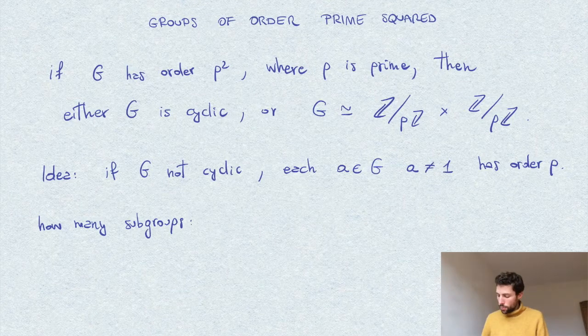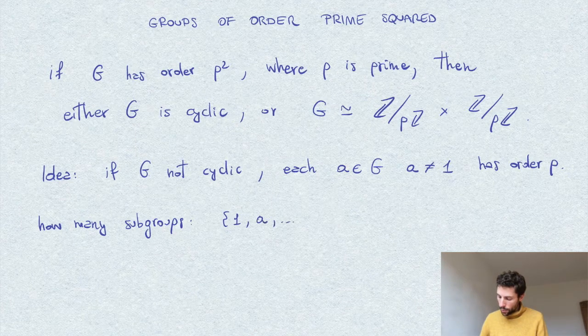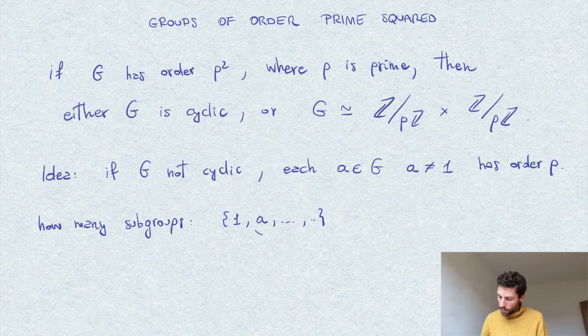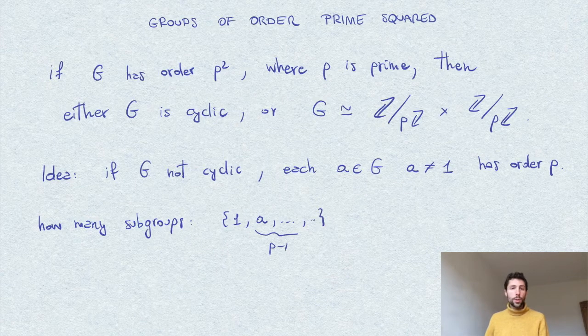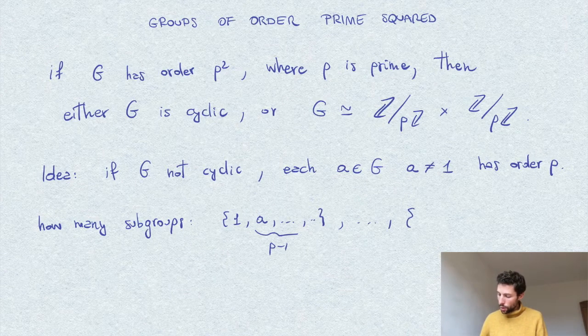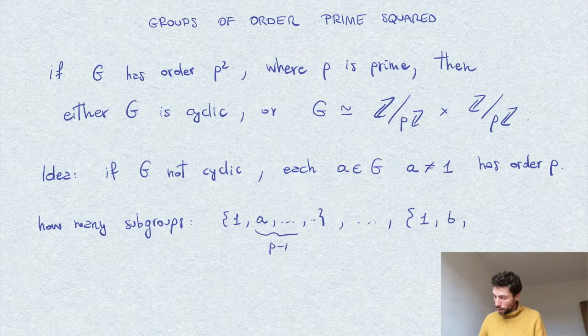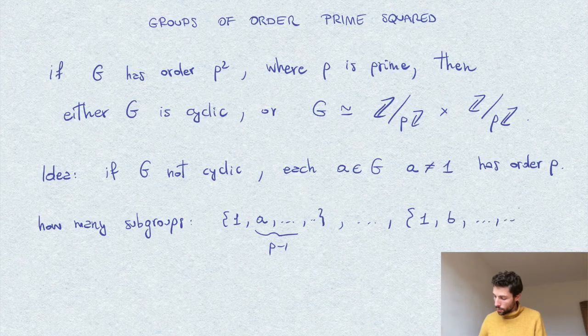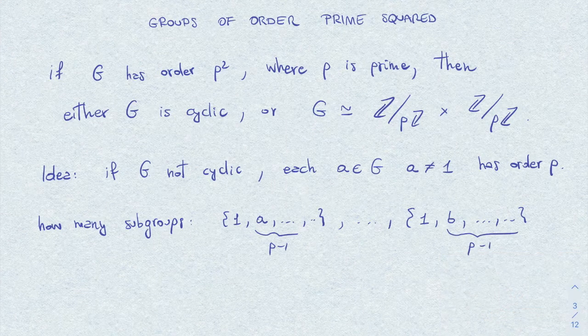Well, each of these subgroups will be of the form 1, then some element, and all of its powers. So here, there will be p minus 1 elements, since it will be always subgroups of order p, and so on for the whole group. So we will cover the whole group,